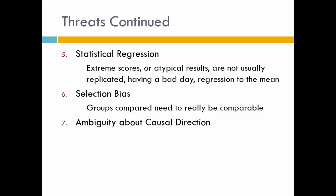Number seven is ambiguity about causal direction, which gets back to the first criterion we discussed. We need to be clear which variable came before the other, and if we can't be clear on that, it's a threat to internal validity.